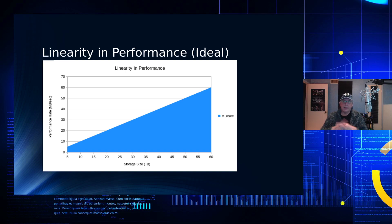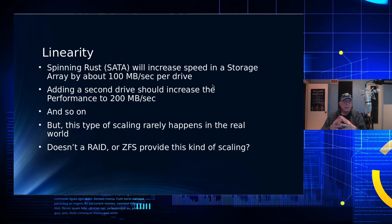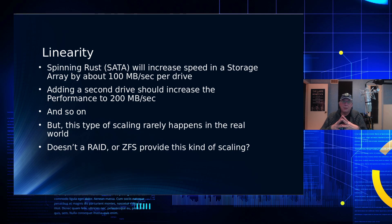That's an ideal state. With spinning rust and SATA, the rule of thumb is around 100 megabits per second. You will find drives that are slower and drives that are faster — it just depends on how fast they're spinning, how dense they are, and where your file might be located on that spindle. In general, about 100 megabits per second is the rule of thumb per spinning rust drive.